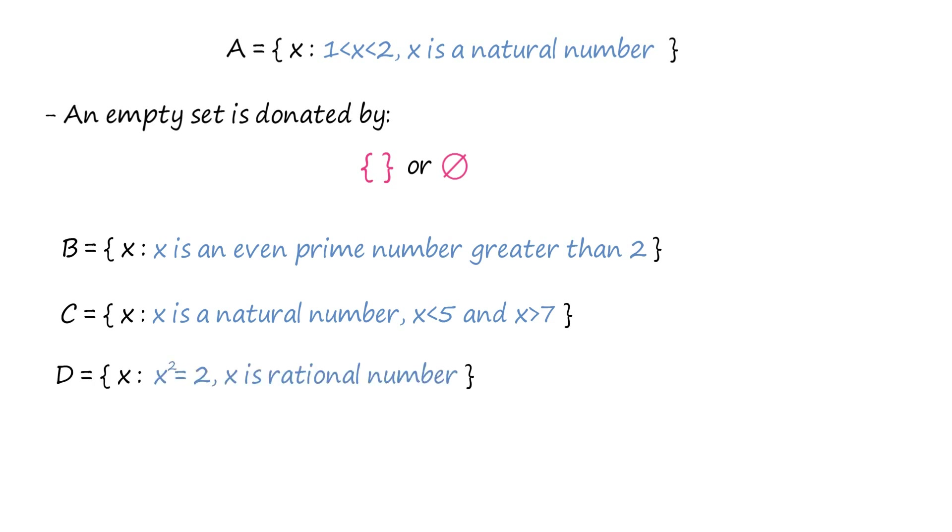The members of set D are the rational numbers whose square equals 2. Since there is no rational number with its square equal to 2, D is an empty set.